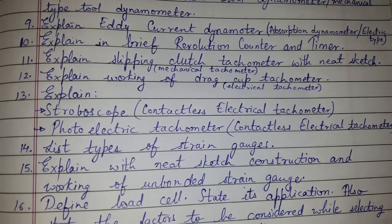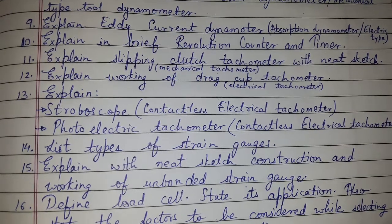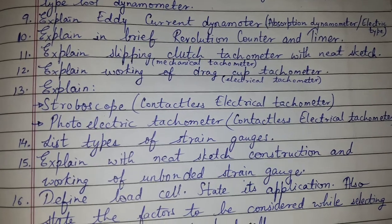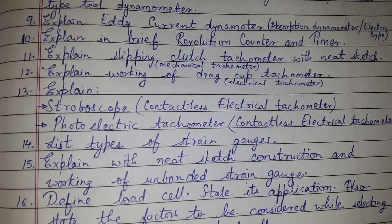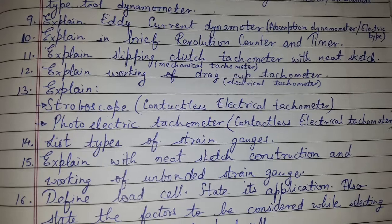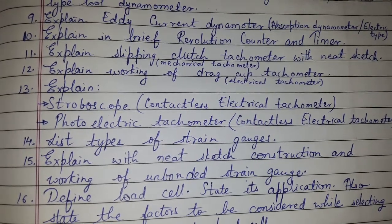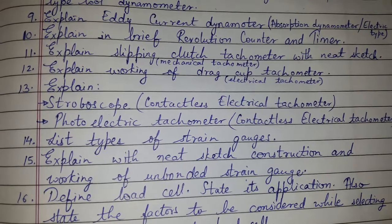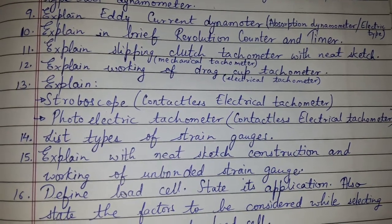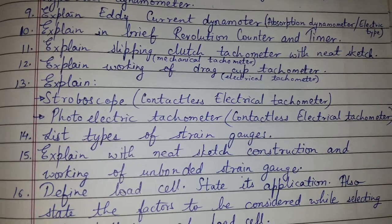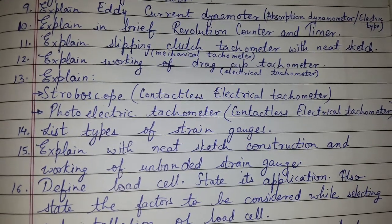Explain working of drag cup tachometer, which is one of the electrical tachometers. Explain stroboscope, which is one of the contactless electrical tachometers. Explain photoelectrical tachometer, which is also one of the contactless electrical tachometers.